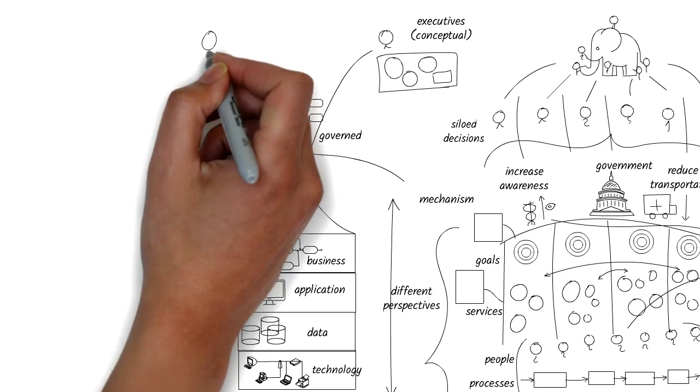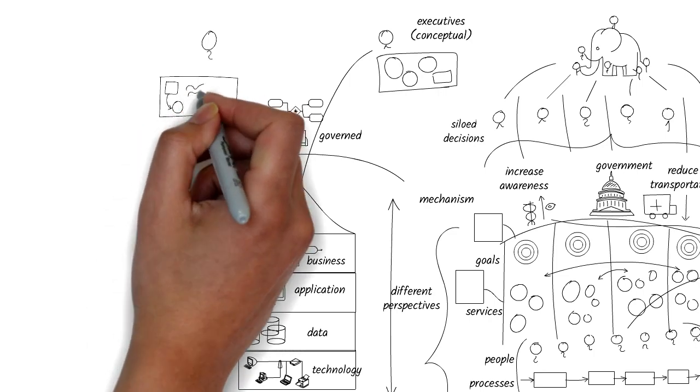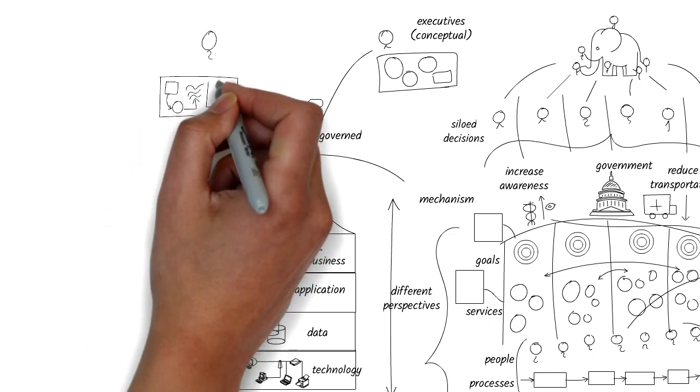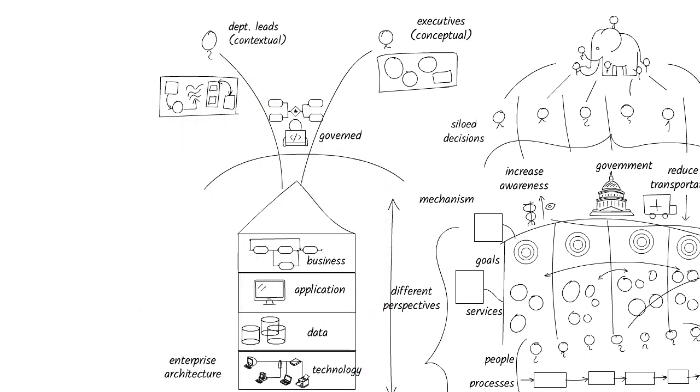The department leaders need what we call contextual architecture to understand and clarify how their departments relate and fit together with other departments. This includes how they own or share responsibility for technology platforms, data, and applications across the enterprise.